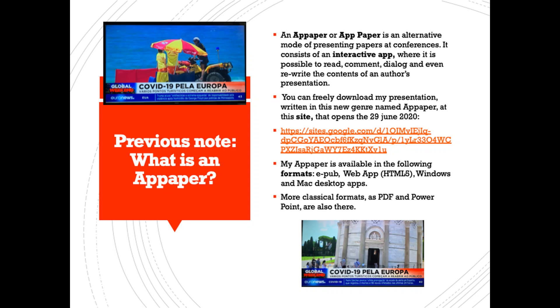Previous note — what is in a paper? An A-paper, or app paper, is an alternative mode of presenting papers at conferences. It consists of an interactive app where it is possible to read, comment, dialogue, and even rewrite the contents of an author's presentation. You can freely download my presentation, written in this new genre named A-paper, at this site, which opens on the 29th of June 2020.